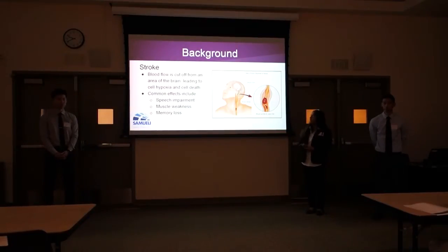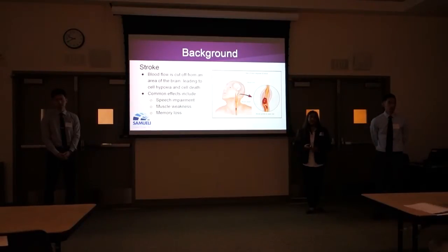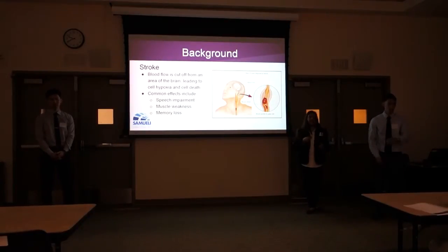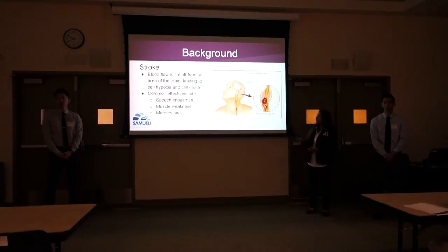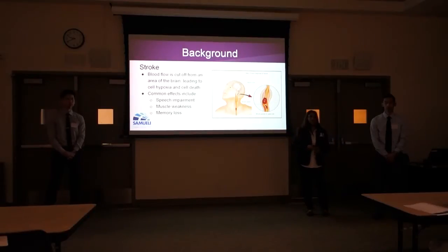A stroke occurs when blood flow is cut off to an area of the brain, and this can lead to cell hypoxia — the cell not receiving enough oxygen. And if this happens for a long enough time, the cell will eventually die. Depending on where the stroke occurs in the brain, some common effects include speech impairment, muscle weakness, and memory loss.